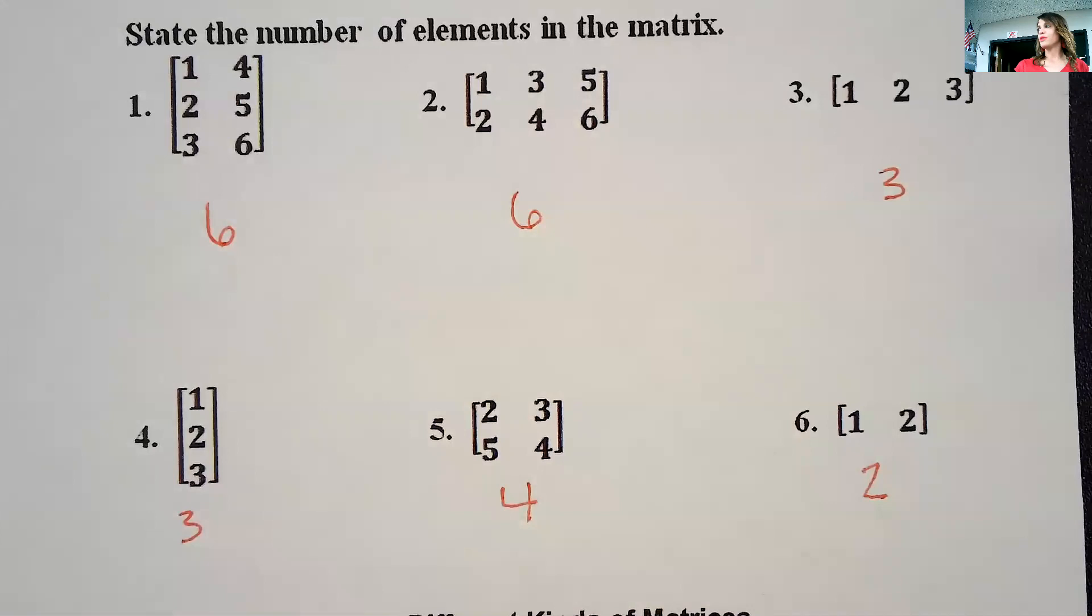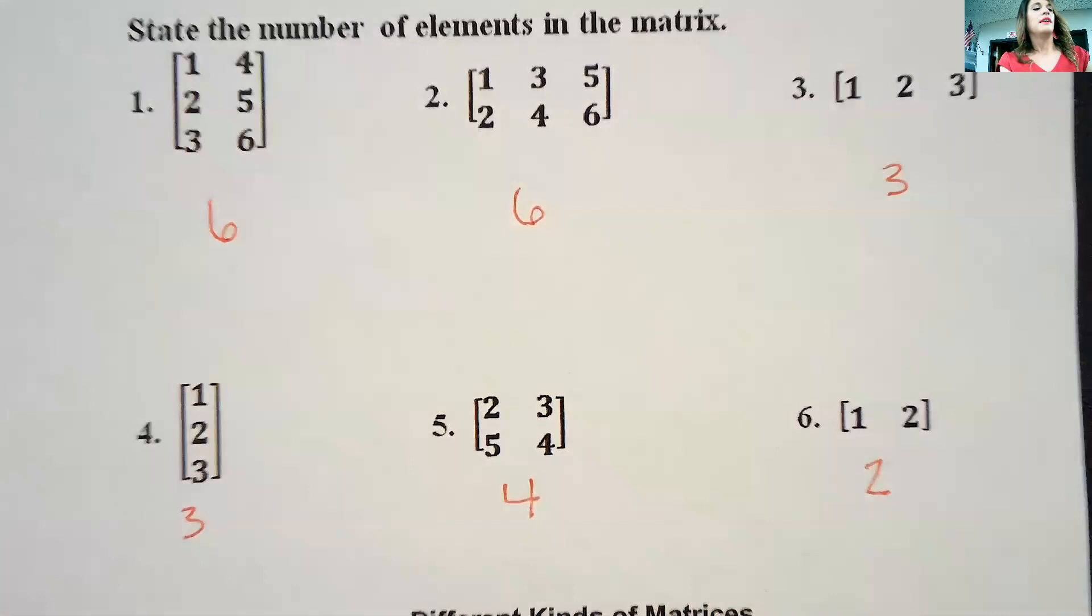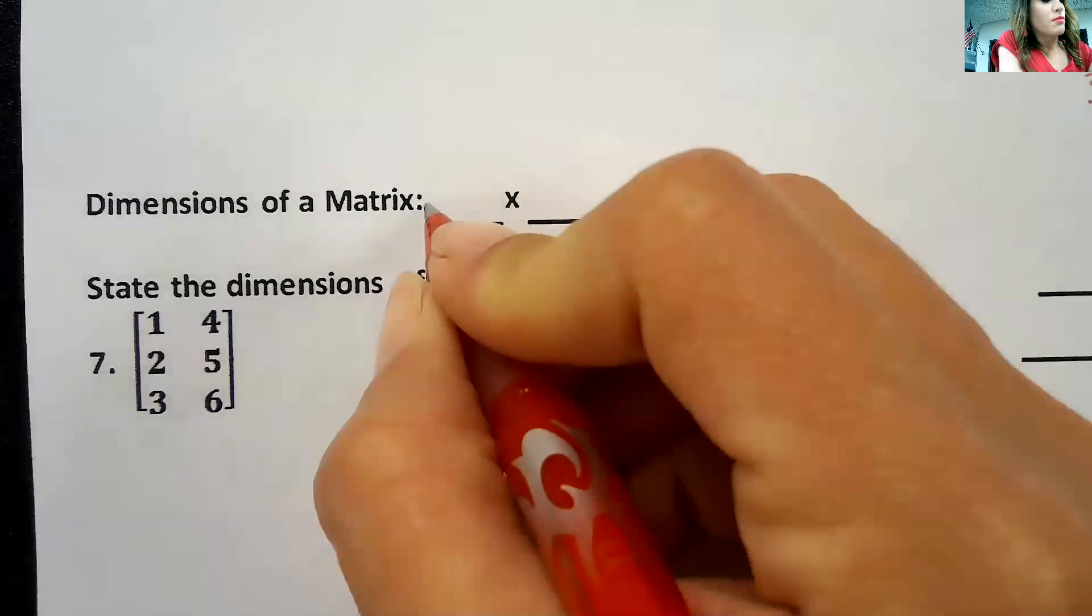This one has four and this one has two elements. That's it, real easy. How many entries there are? Each one of these counts as an element. When they do the dimensions of the matrix, it's always rows by columns.